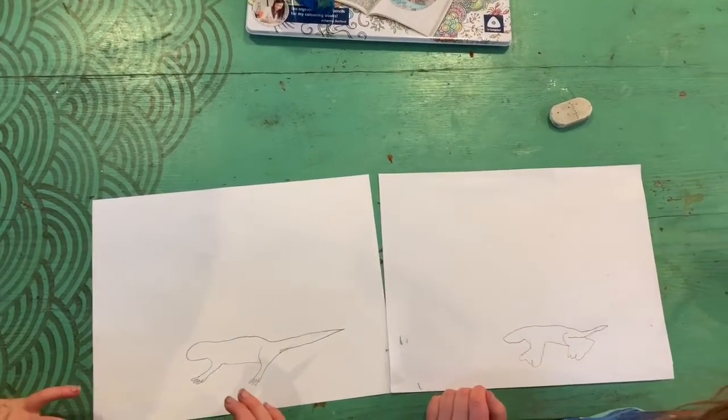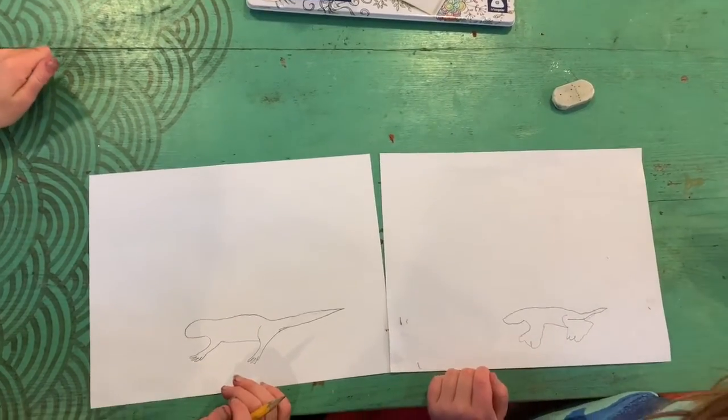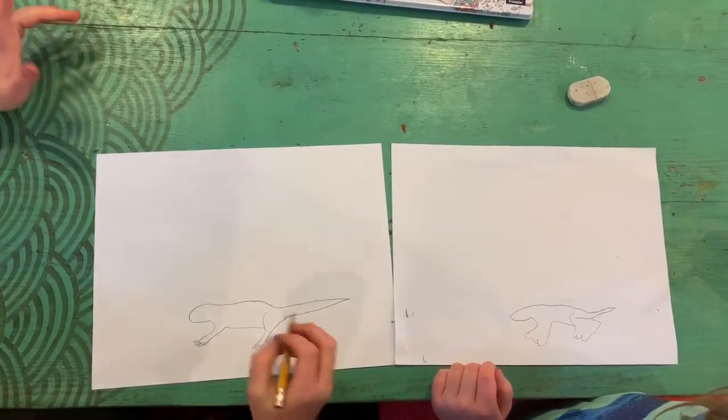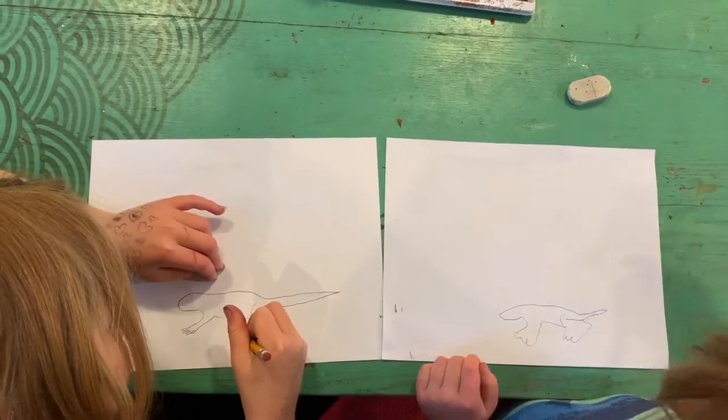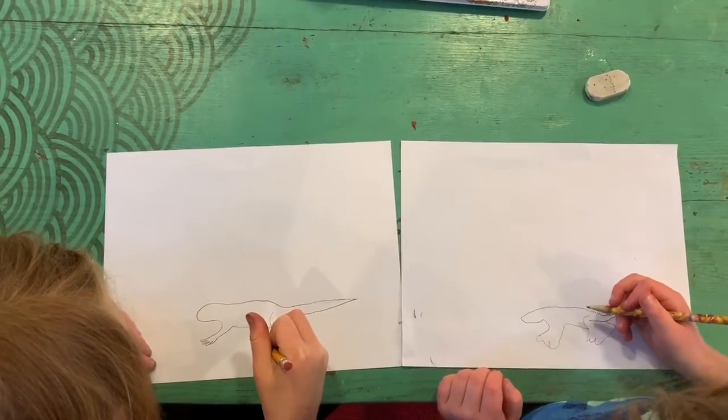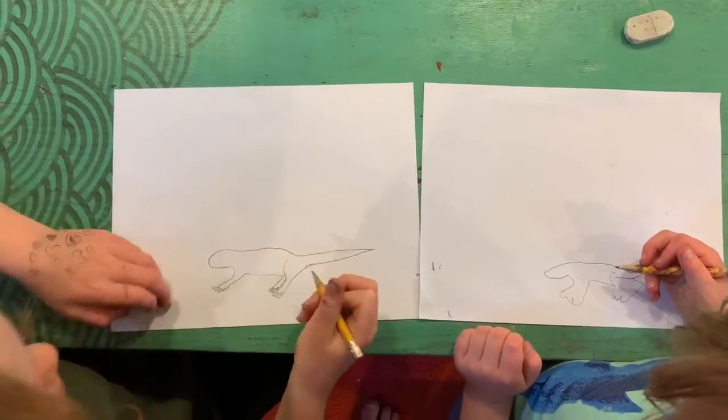Because wouldn't it be kind of weird to have a lizard with two legs? So let's draw the other two legs. So we're going to do a little bit of that in the back. And then we're going to draw the legs or the toes. And then back up.